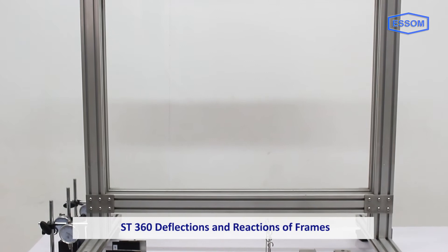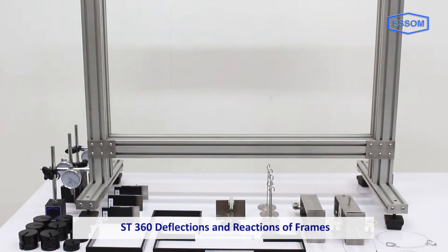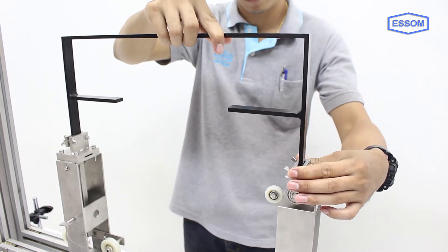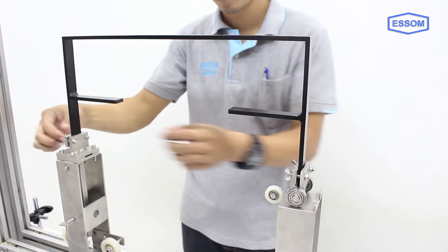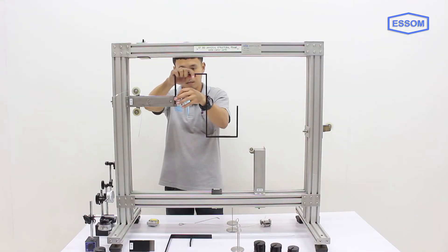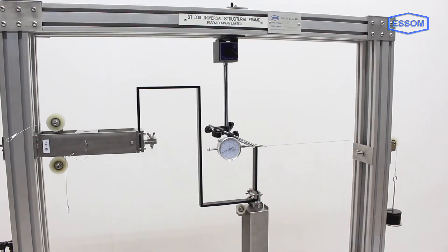The SM ST360 deflections and reactions of frames equipment allows comparison of experimental and theoretical deflections and reactions of a rectangular portal and an S frame when loads are applied. It is to be used with the ST 300 universal structural frame, separately supplied.